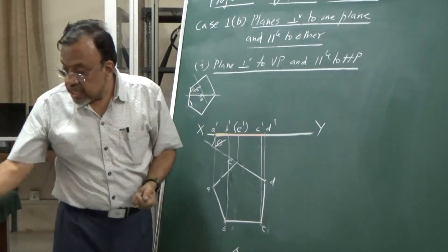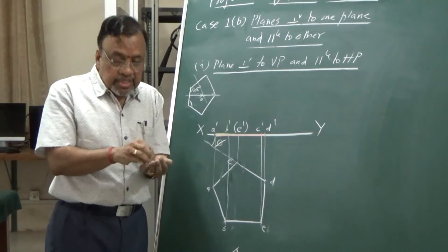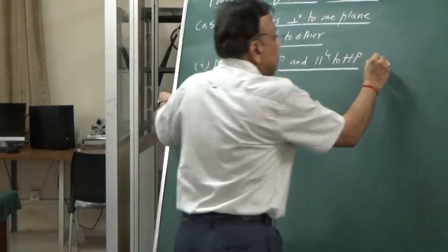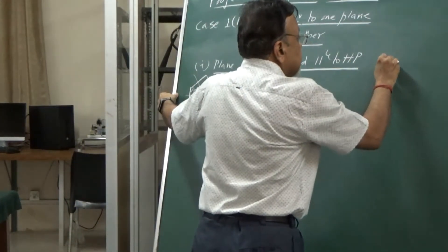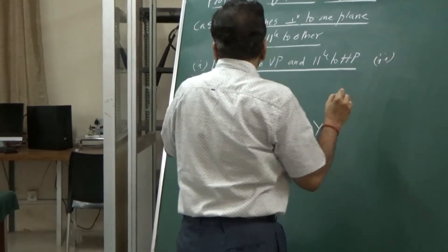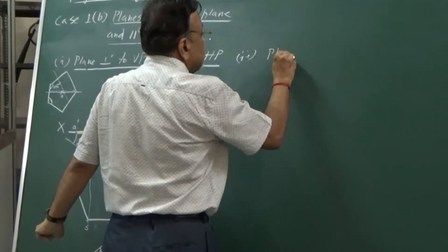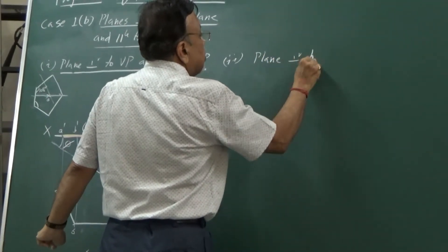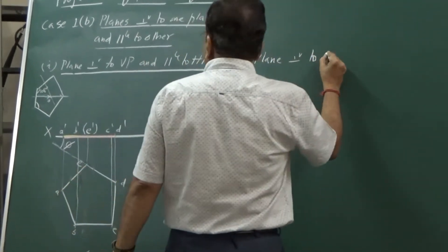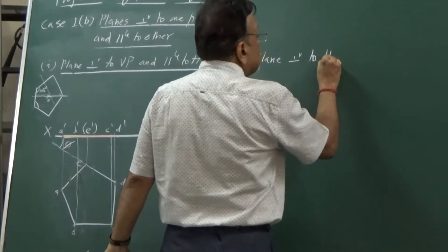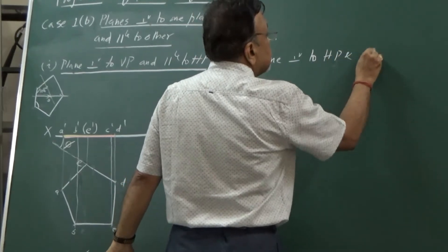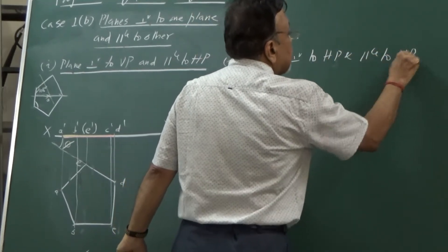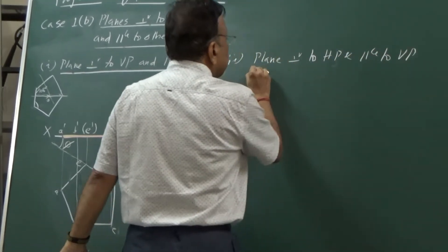This is the first case. Now let us discuss the second case. The second case is a plane perpendicular to HP and parallel to VP.